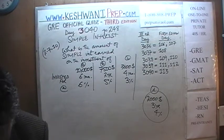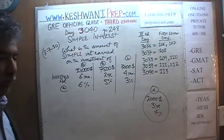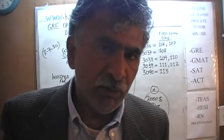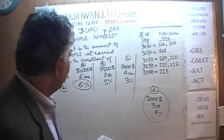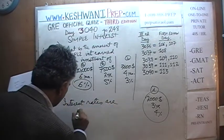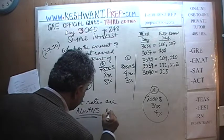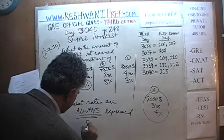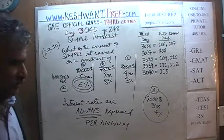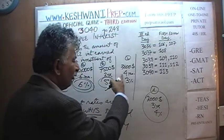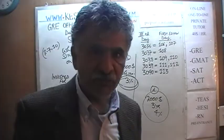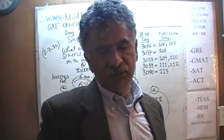We have $10,000 invested for 6 months at 6%. What we must always remember is that interest rates are always expressed per annum. Nobody needs to tell us that 6% is per year, or 5% per year, or 3% per year — even though you are only investing for a few months. It is understood that interest rates are expressed per year.